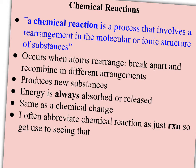A chemical reaction is a process that involves a rearrangement in the molecular or ionic structure of substances. A chemical reaction can occur between covalently bonded or ionically bonded substances. It occurs when the atoms rearrange, break apart, break the chemical bonds holding them together, and then recombine or reform different arrangements with new bonds.